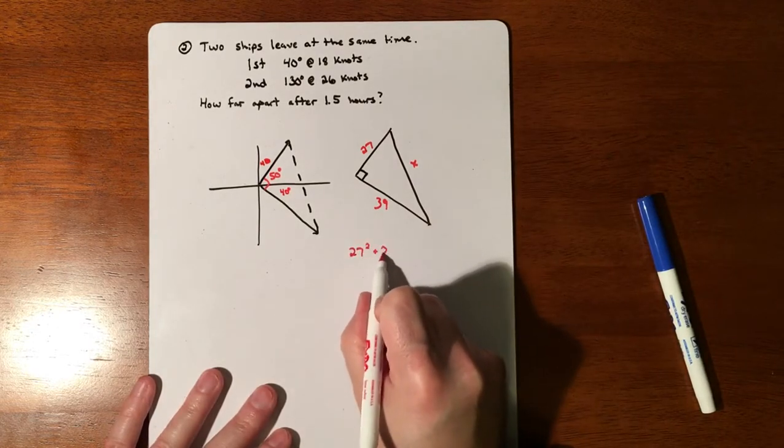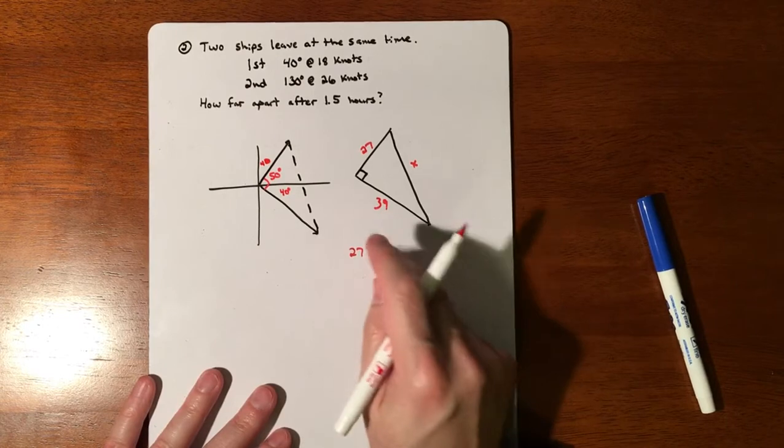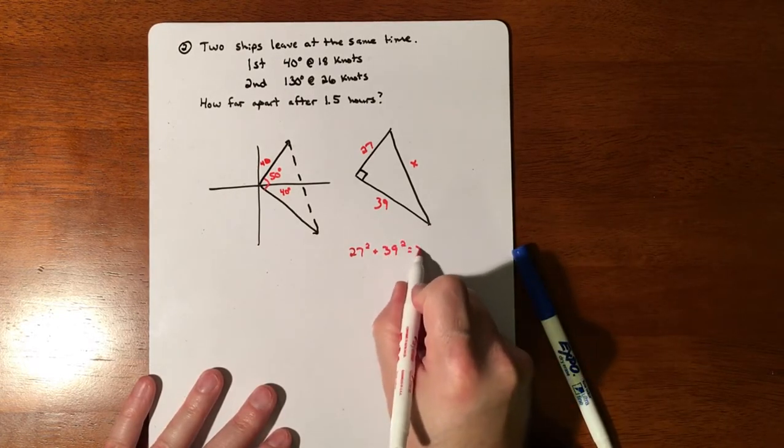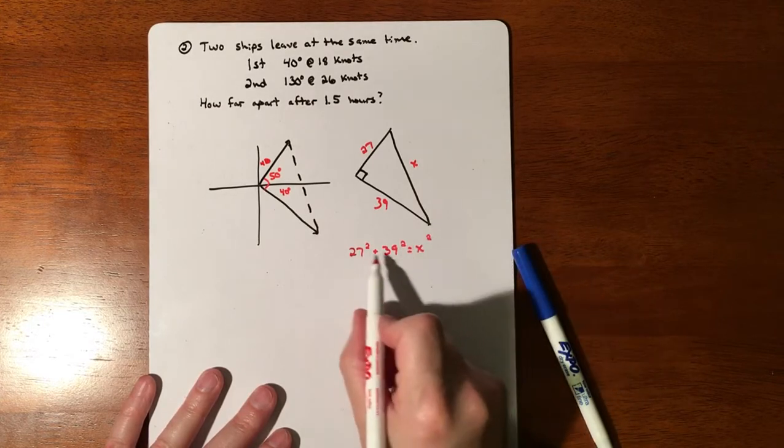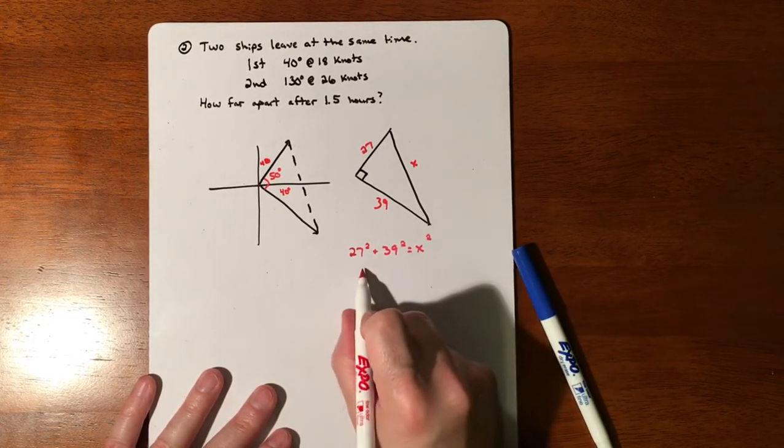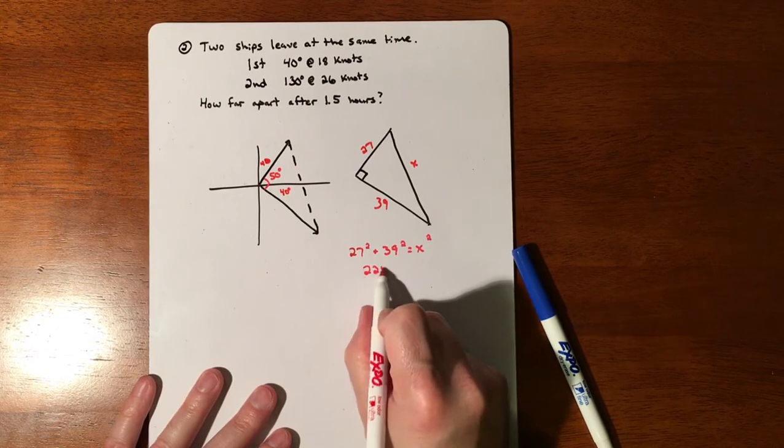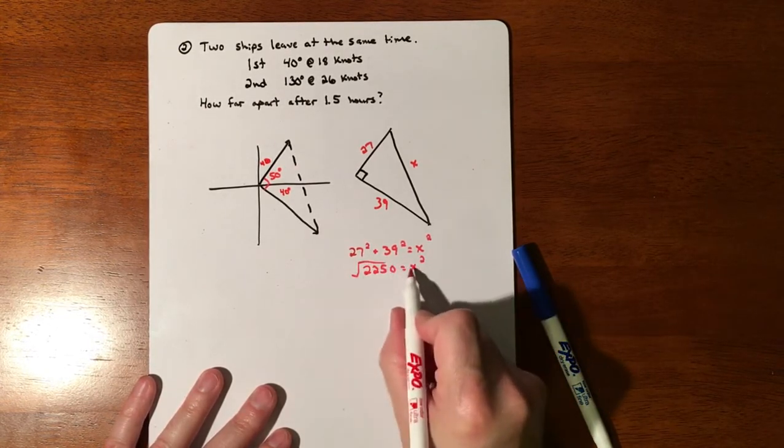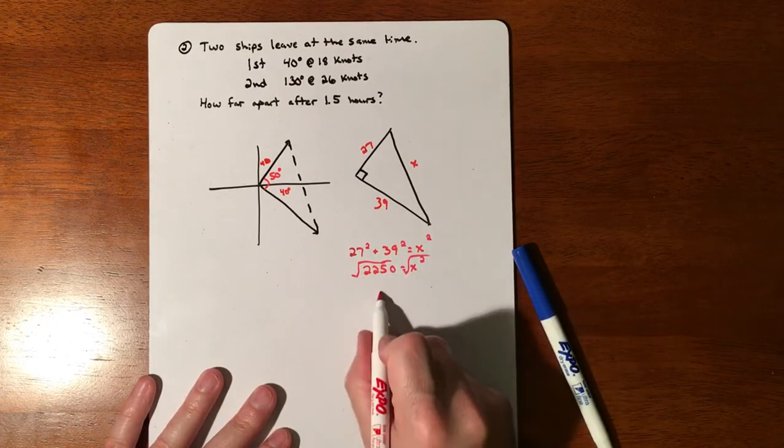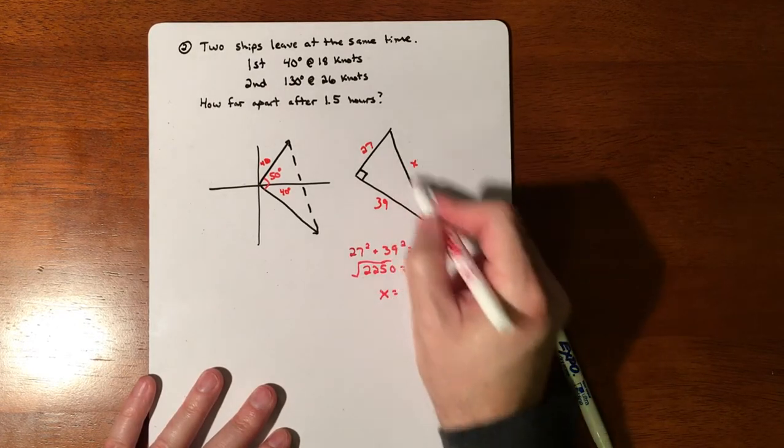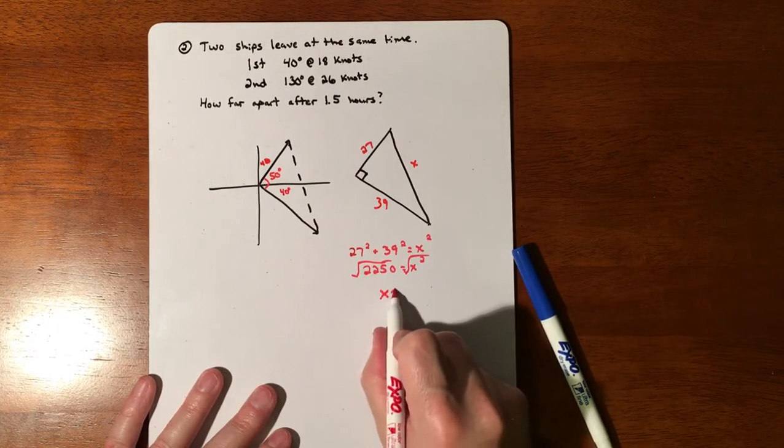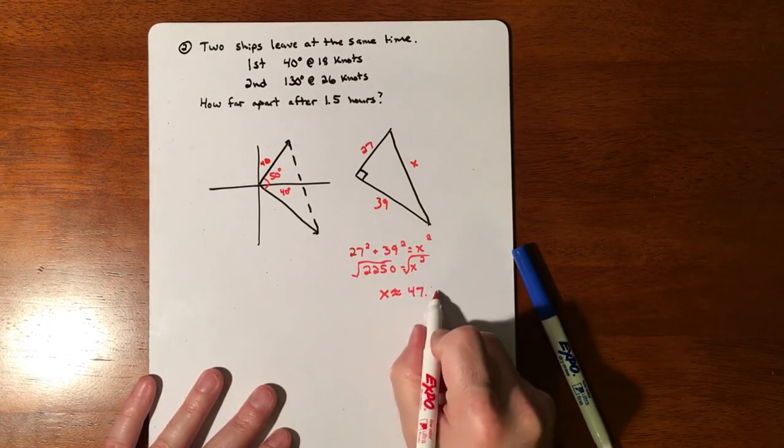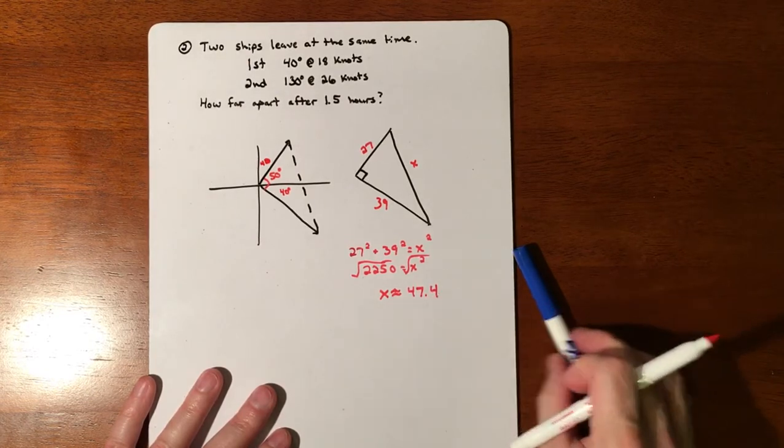If we did Pythagorean theorem, we'll do 27 squared plus 39 squared and that's going to equal our hypotenuse squared. If you square this, square this, add it together, it ends up to 2250. Square root both sides and our distance apart from each other is about 47.4 nautical miles.